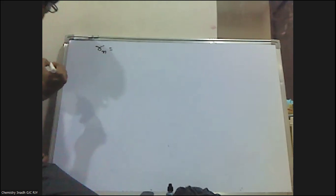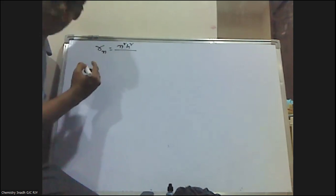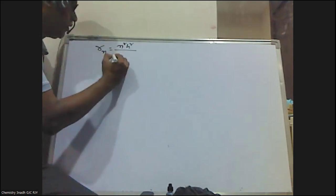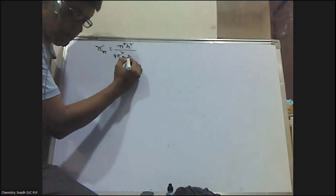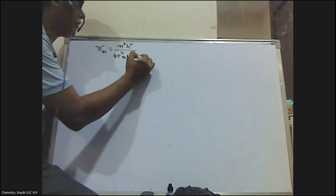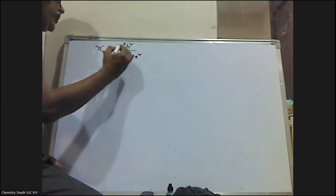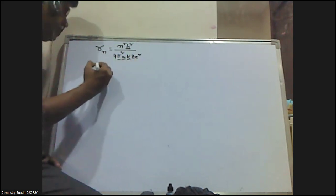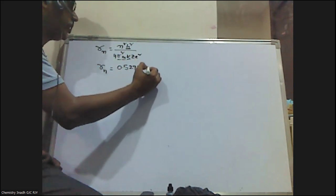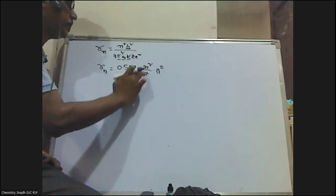We know that the expression for the radius of the nth orbit is rn = n²h² / (4π²mze²). If we substitute the constant values h, π, and m (mass of the electron), we get the expression: rn = 0.529 × n²/z angstrom units.